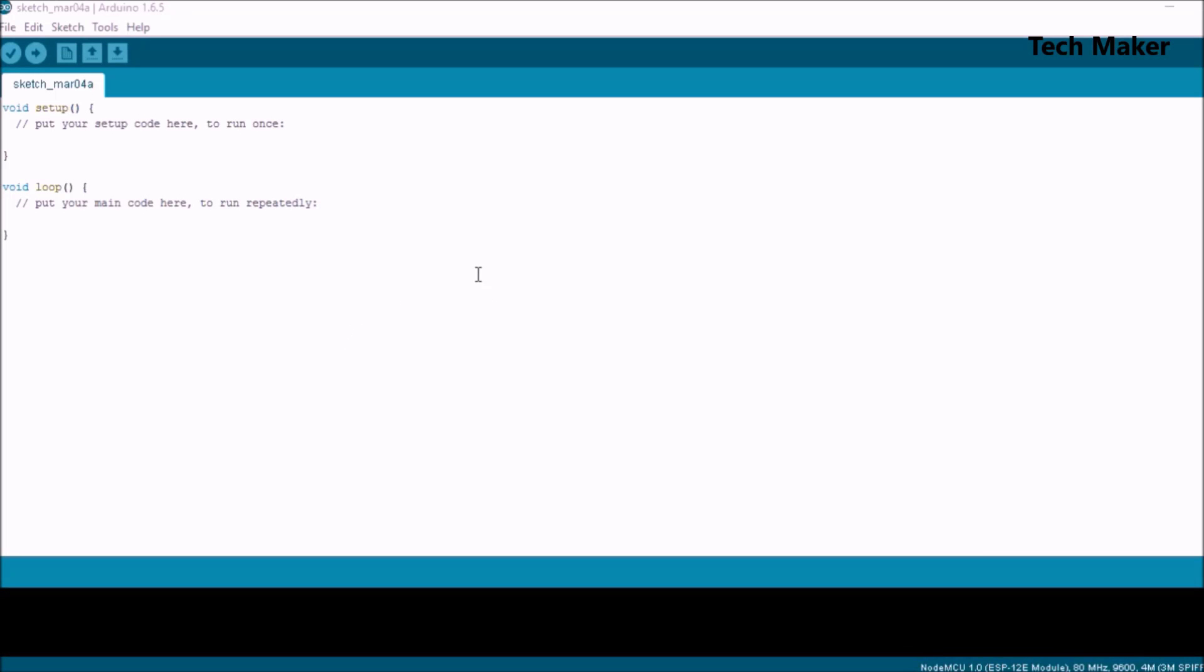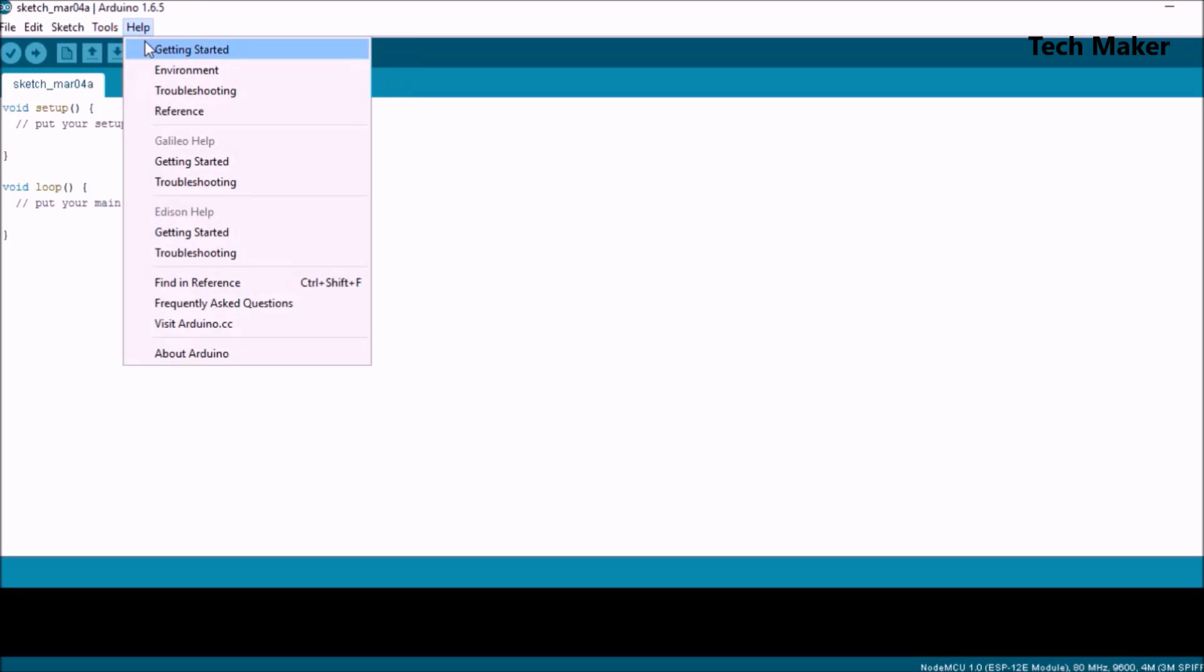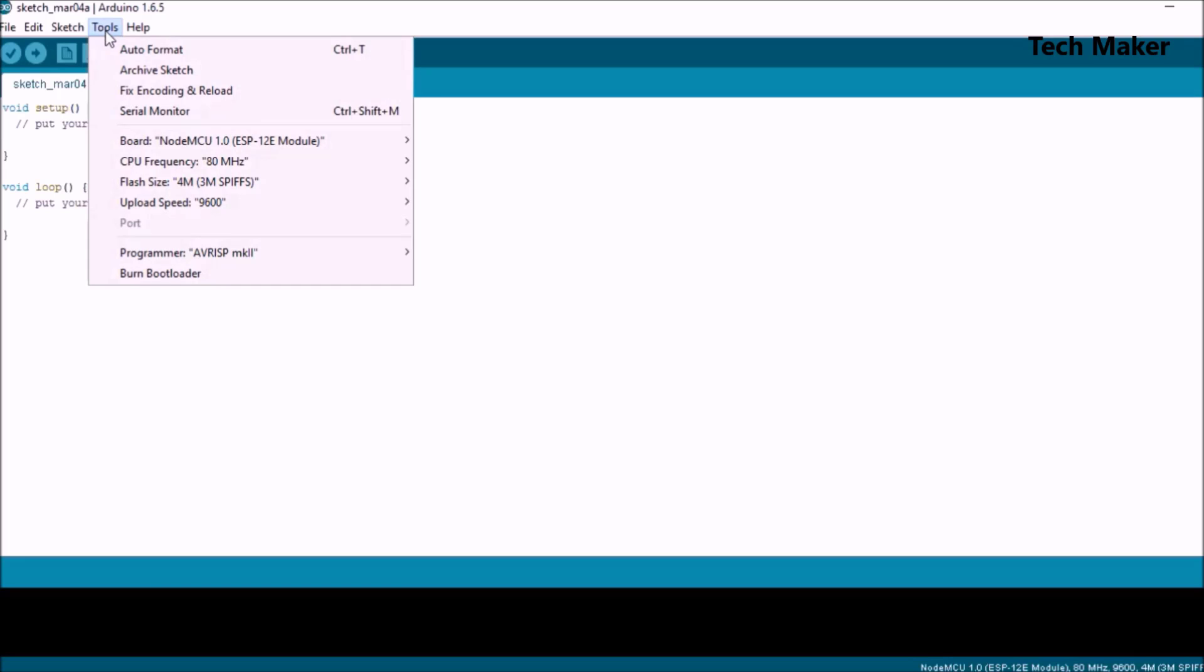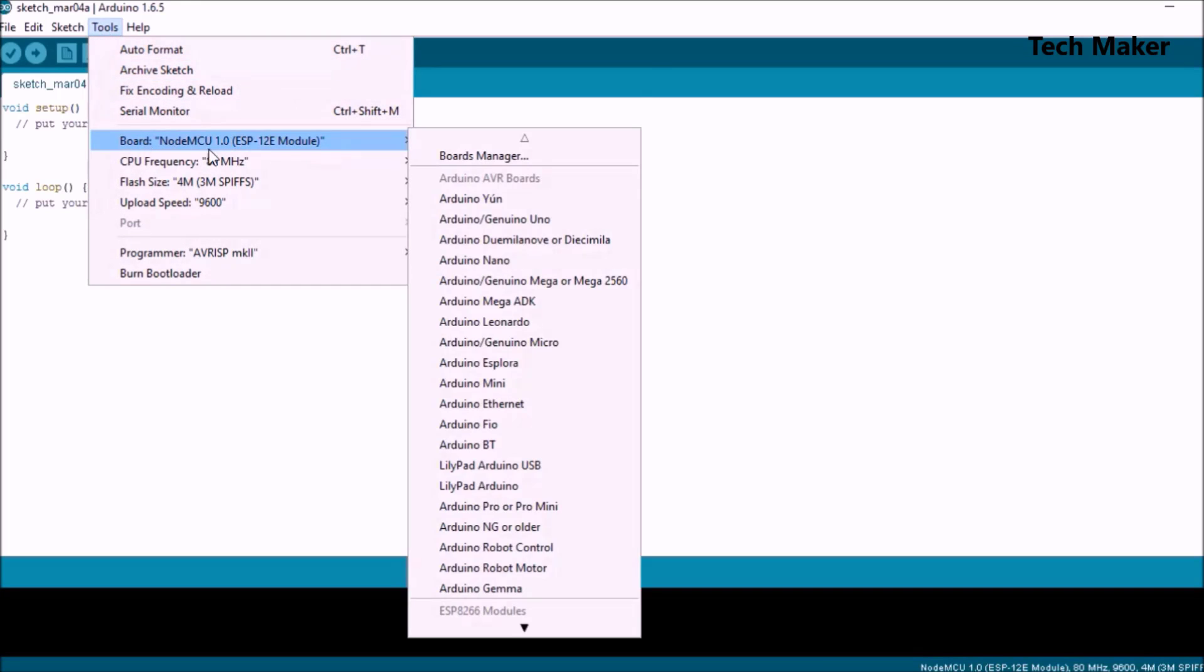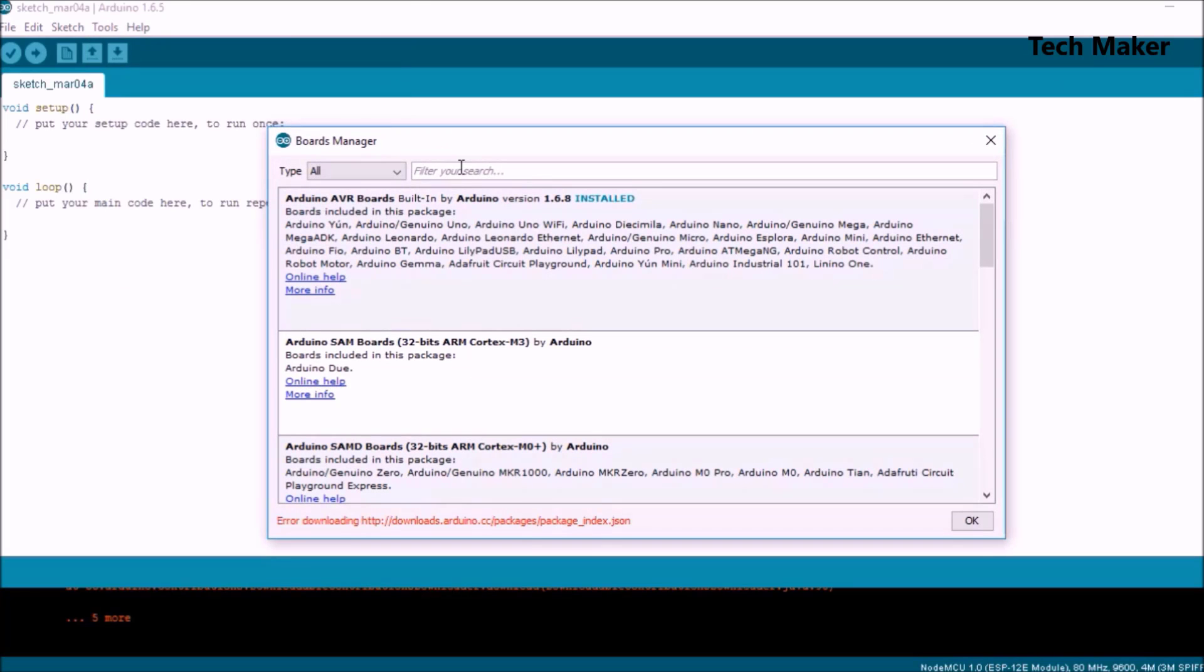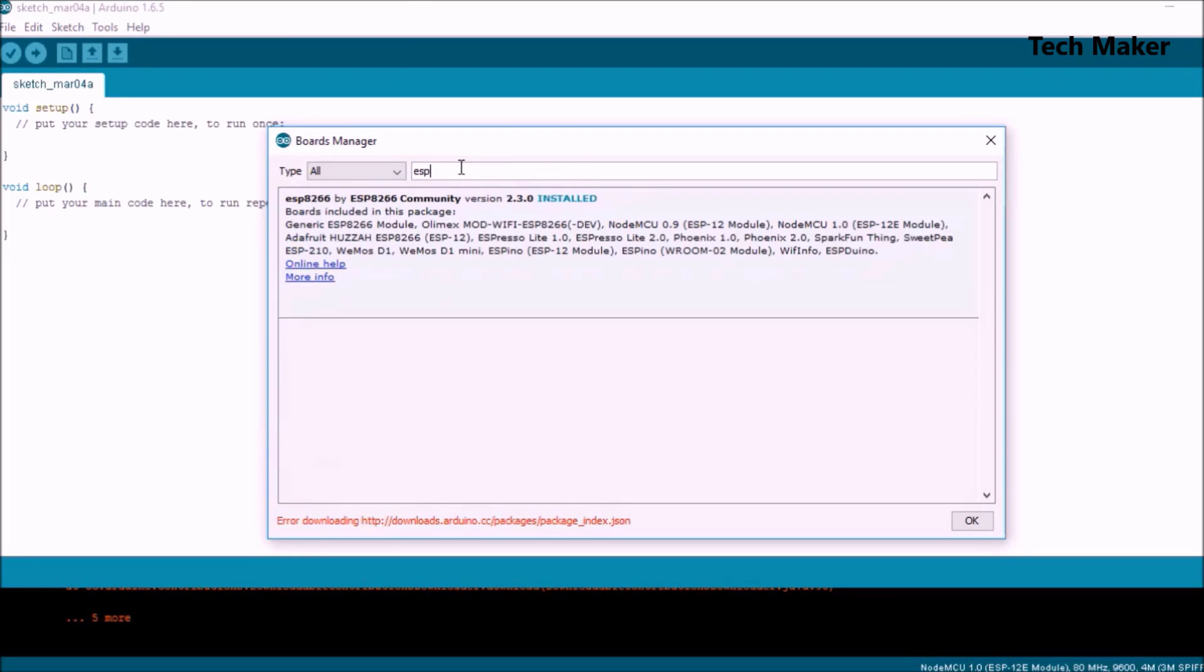First, open the Arduino IDE and go to Tools, then go to Boards and Boards Manager. Here you need to add the NodeMCU ESP8266 module, so type ESP8266. This is the board we have to include in the Arduino IDE, so it needs to be installed. I already installed it, so I'm not installing it right now.